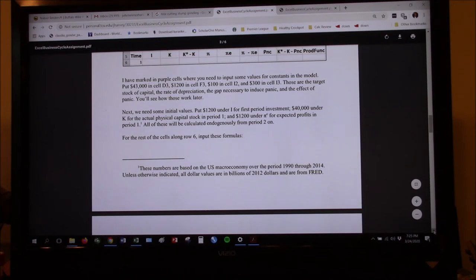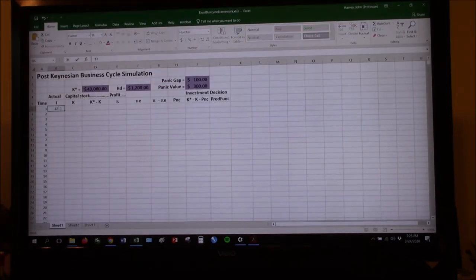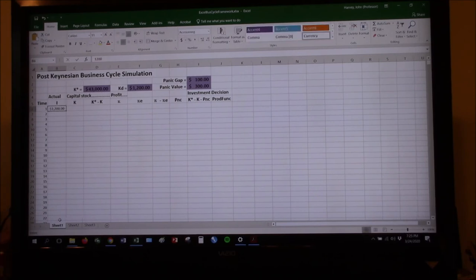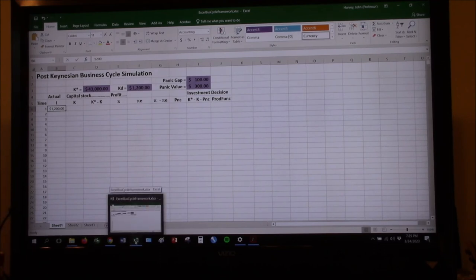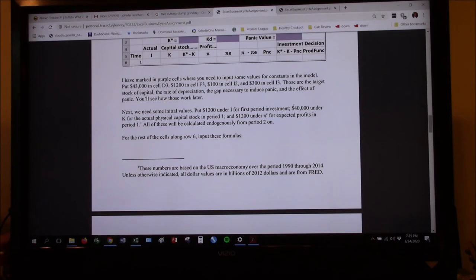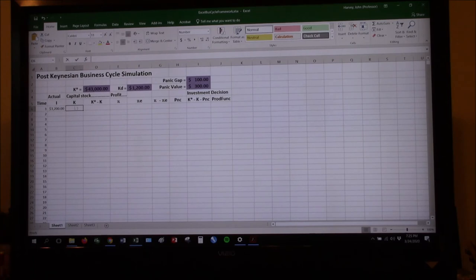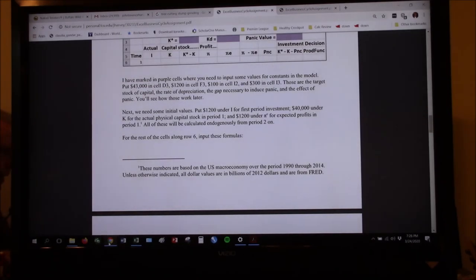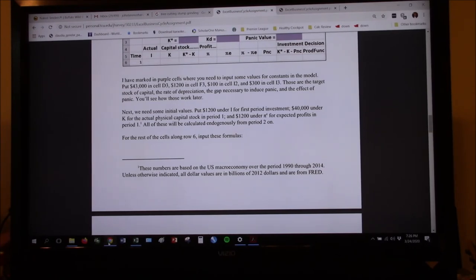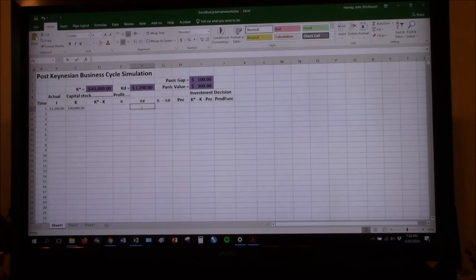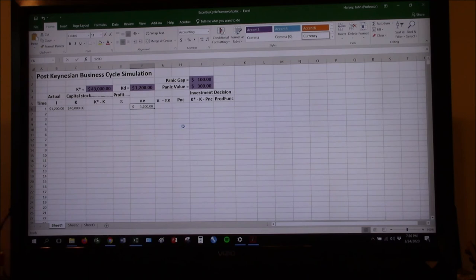Let's see. Expected profits. Okay. Next, we need some initial values. Put $1,200 under I for the first period investment. And what I mean by that is $1,200 right there. First period investment. $1,200. Because we don't have a previous quarter's decision to look at. We're just going to have to go with, it turns out that in the previous period, they must have decided to invest $1,200. So this period, they're investing $1,200. Then $40,000 under K, we are bringing forward that much in the stock of capital. And we want $1,200 under expected profits. All right. Another dollar sign in there. Control S. Go ahead and save that so I don't end up losing it.